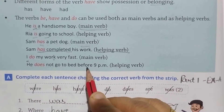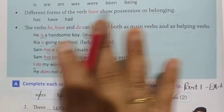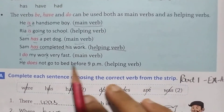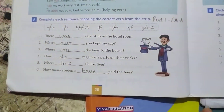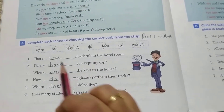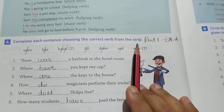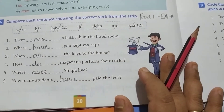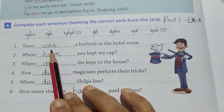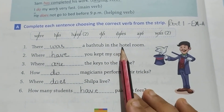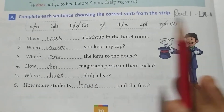'He does not go to bed after 9 pm.' I hope this is clear. Now we will start with Exercise A: Complete each sentence by choosing the correct verb from the box. I have given you the verbs that you have to use. Number 1: There was a bathtub in the hotel room.